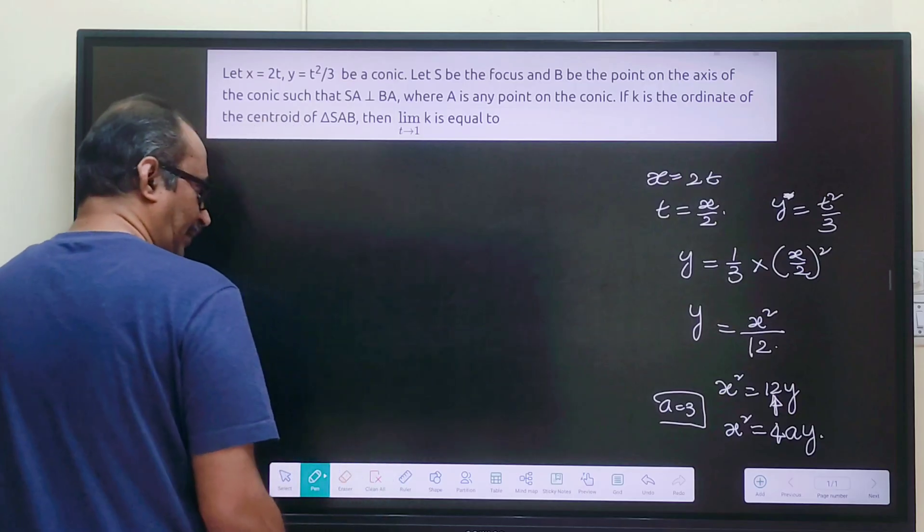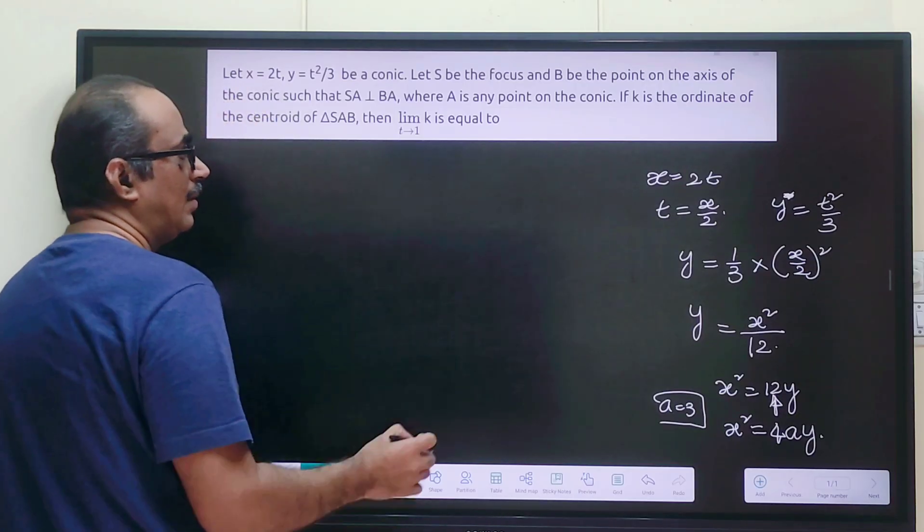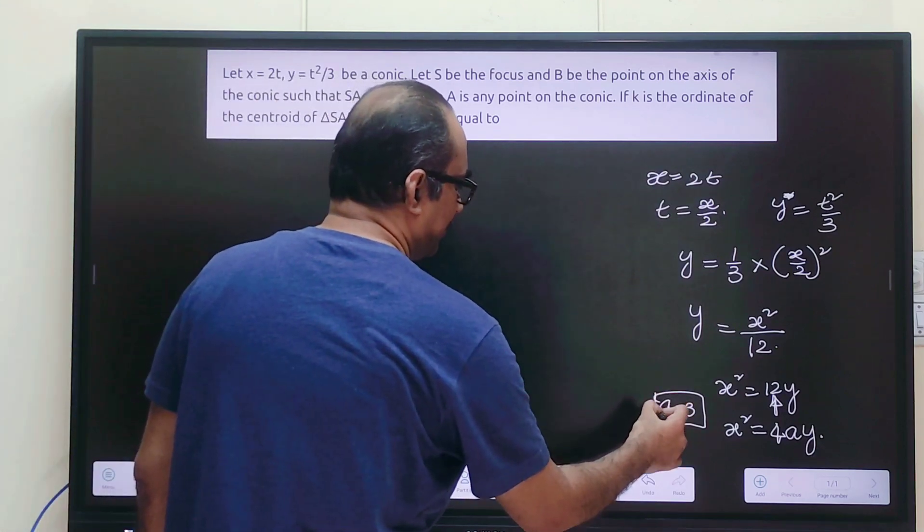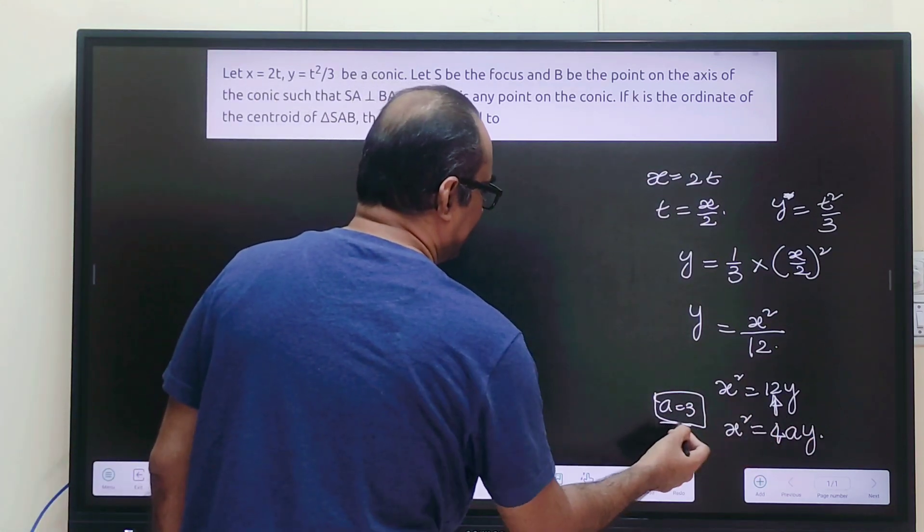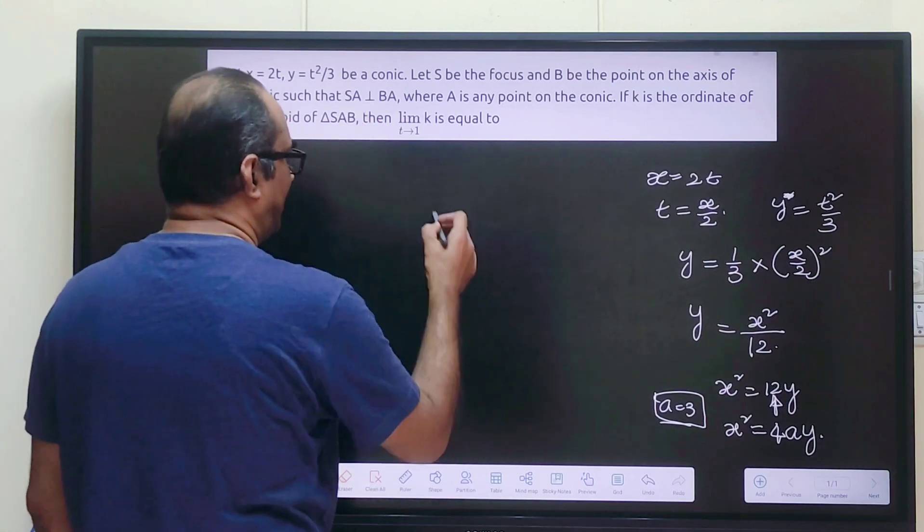We are getting x² = 4ay with a = 3. Now let us see how this parabola will be.